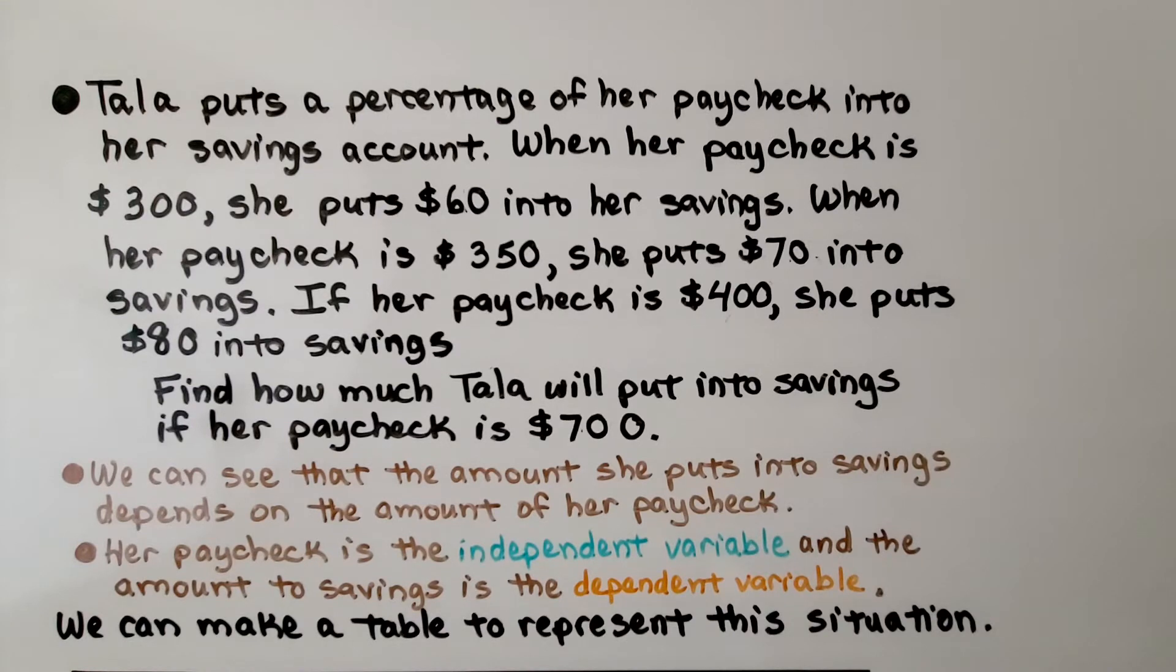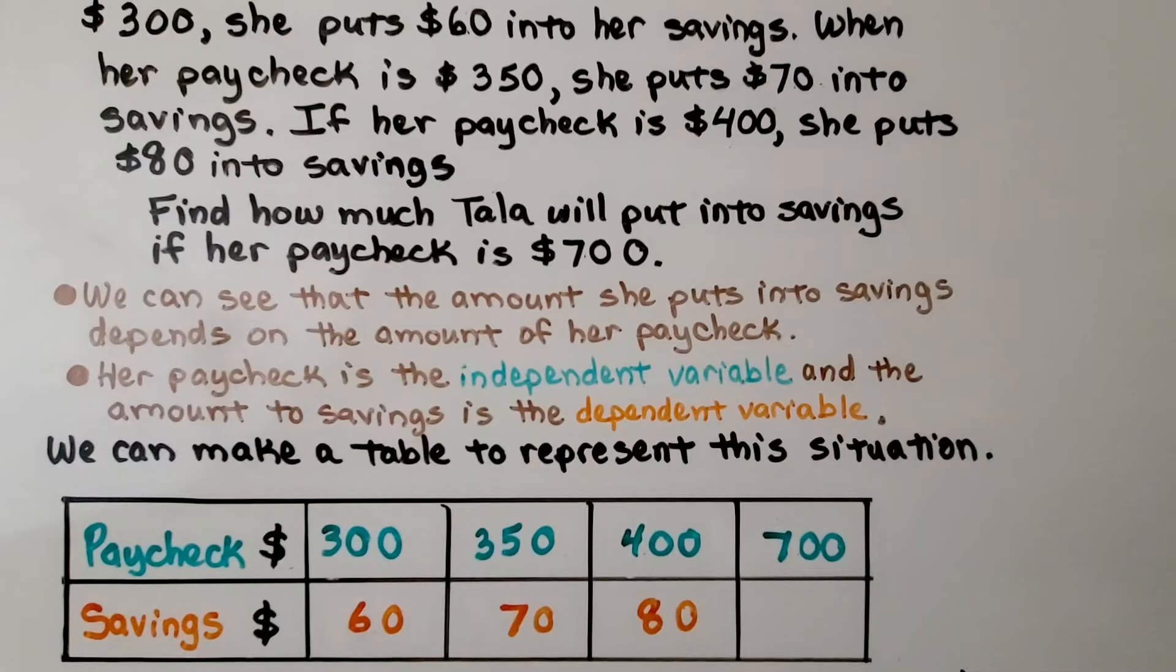Her paycheck is the independent variable and the amount to savings is the dependent variable. We can make a table to represent this situation. The independent variable is the paycheck. The dependent variable will be the savings. We fill in the table with the given amounts. We need to find how much will go into savings if her paycheck is $700.